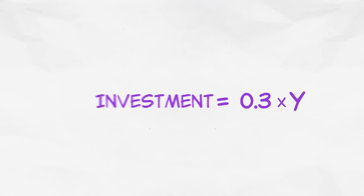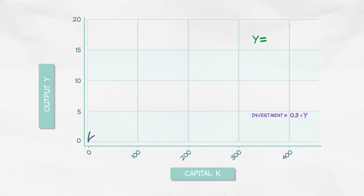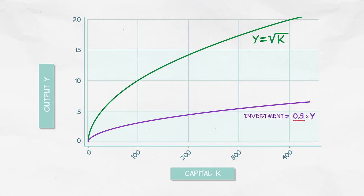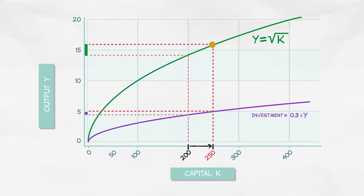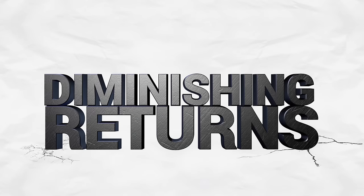We can now add an investment curve to our graph. It'll mimic the shape of the output line, since investment is just a constant fraction of output. Notice that our first units of capital are very productive, and so they create a lot of output and thus also a lot of investment. But as we add more and more units of capital, we get less output and also less investment. That's the iron logic of diminishing returns once again.